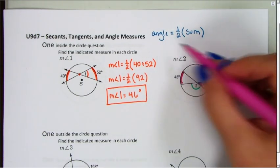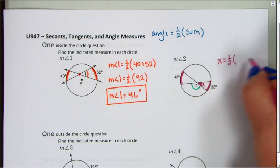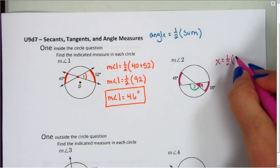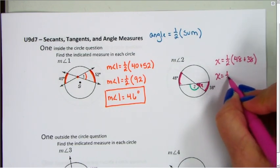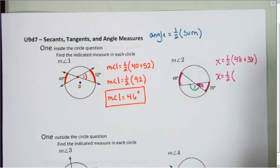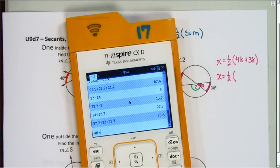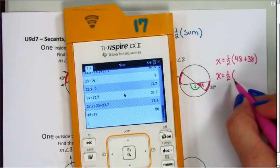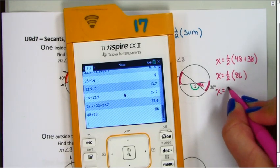Again, I'm going to use this formula. The angle, which I'm calling x, is going to equal one-half the sum of the two arcs. My two arcs are 48 and 38. So x is going to equal one-half of 48 plus 38 is 86. And when I take half of that, x is going to equal 43.